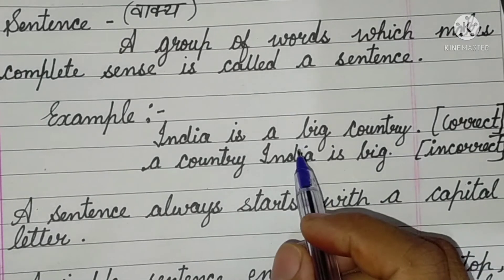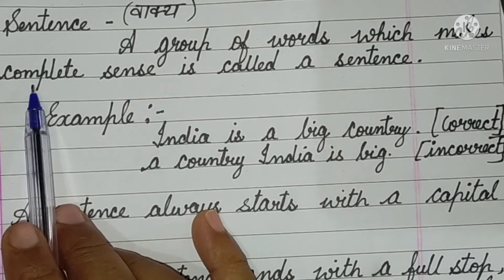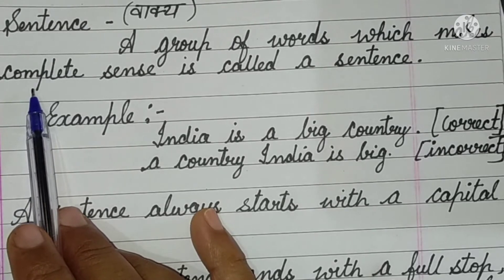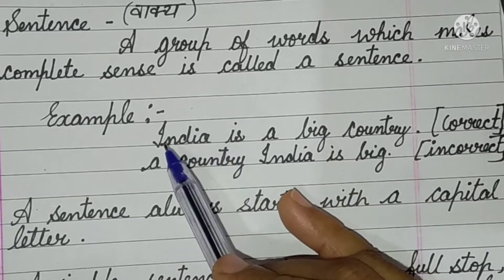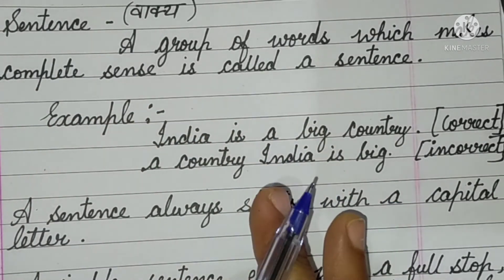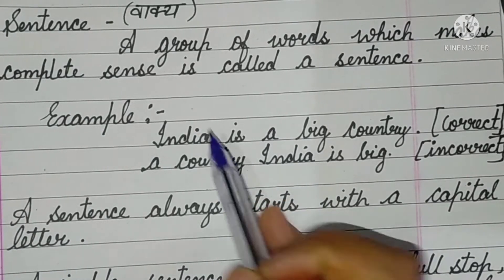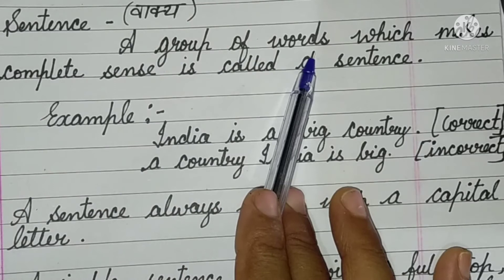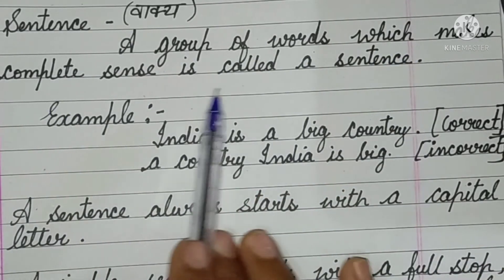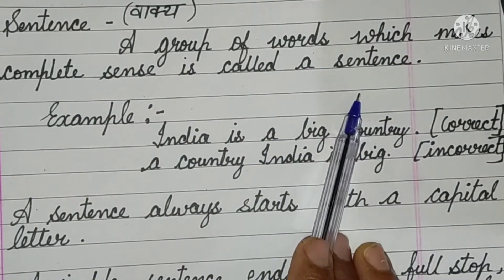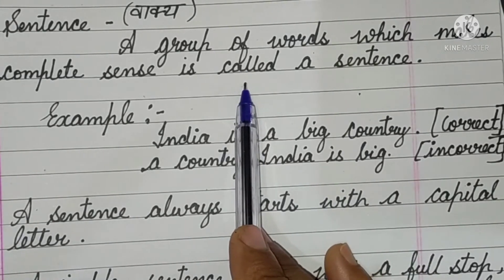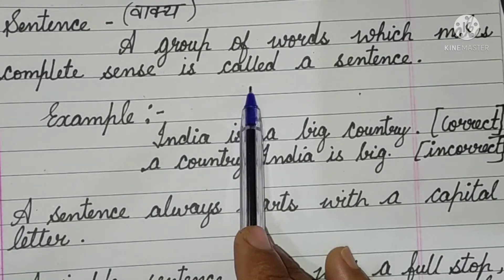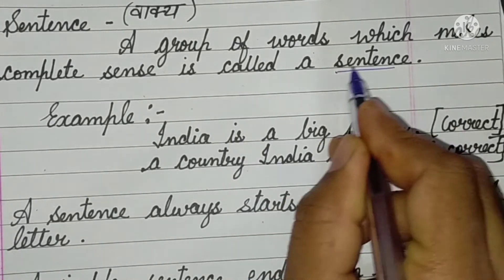Now we are going to learn about the topic of sentences. There is a topic in the textbook regarding the sentence — like assertive sentence. So I am going to explain the whole part. A sentence means vakya — a group of words which makes complete sense is called a sentence. Shabdon ka jo samuha hota hai jisse ek arthapurna sense banta hai, use hum sentence kehte hain.